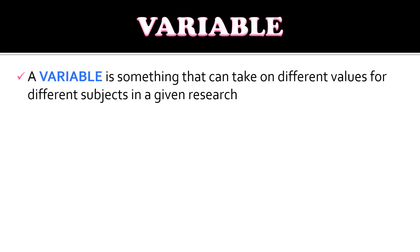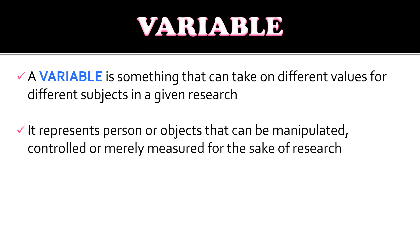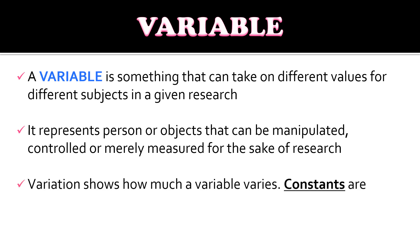So first, let us define what is a variable. A variable is something that can take on different values for different subjects in a given research. It represents persons or objects that can be manipulated, controlled, or merely measured for the sake of research. Variation shows how much a variable varies, while constants or variables lead to little variation.